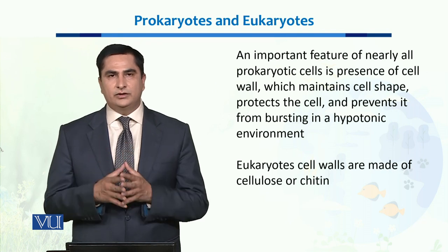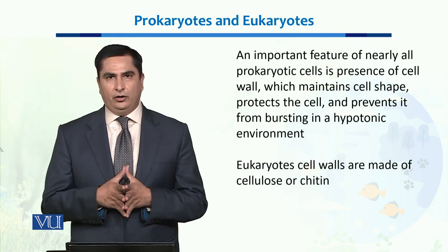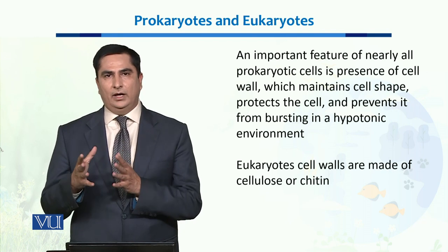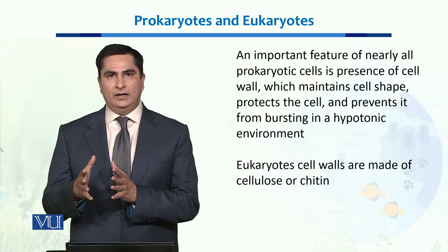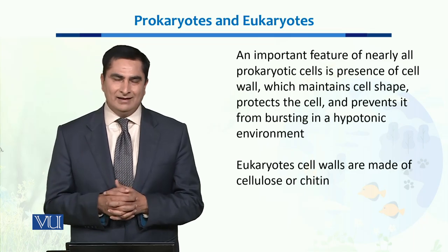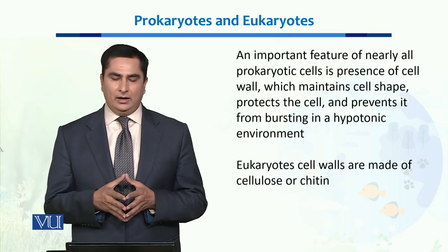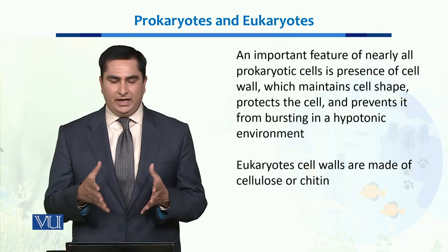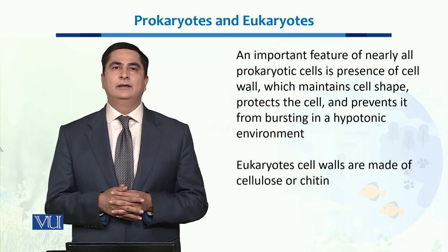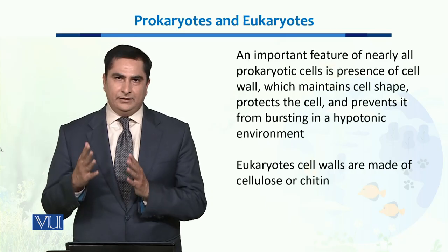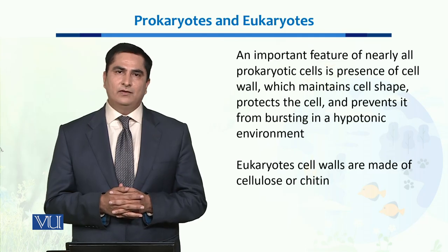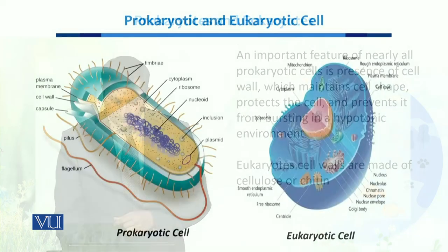Only two types of eukaryotes have a cell wall: plants and fungi. The plant cell wall is made up of cellulose, while the fungi cell wall is made up of chitin.